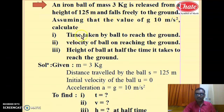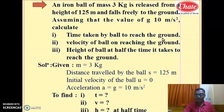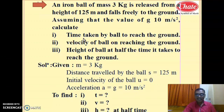What are the parameters which we have to calculate? First, calculate the time taken by the ball to reach the ground — this is the time of descent, the time taken from the maximum height position to the ground, which is a one-side journey. In an earlier example we studied a ball thrown upward and returning; here the ball's journey is only one side.